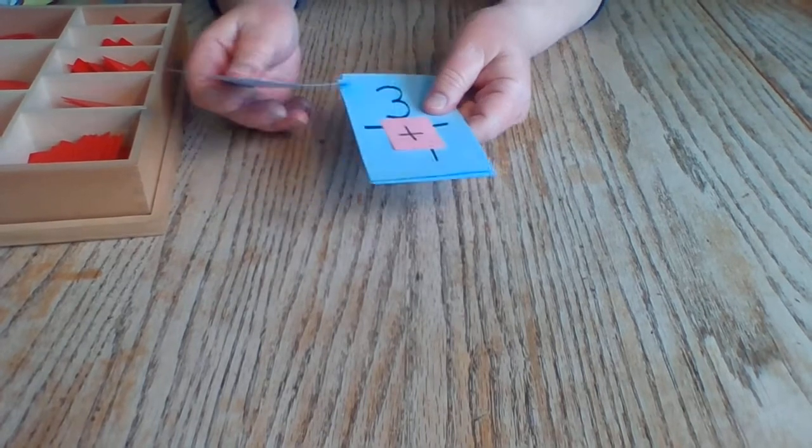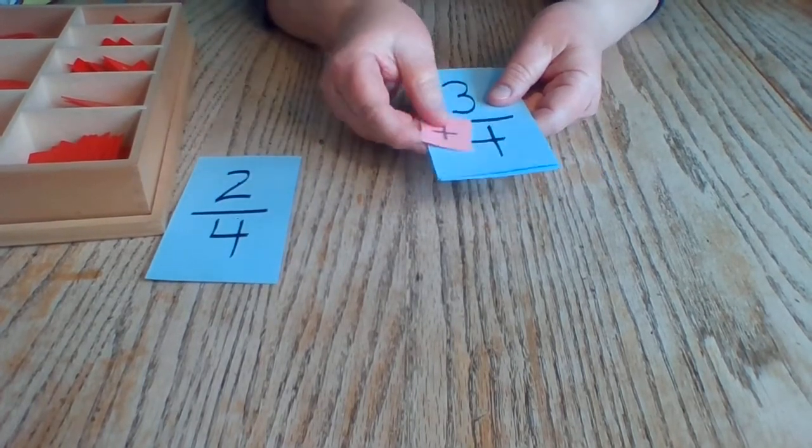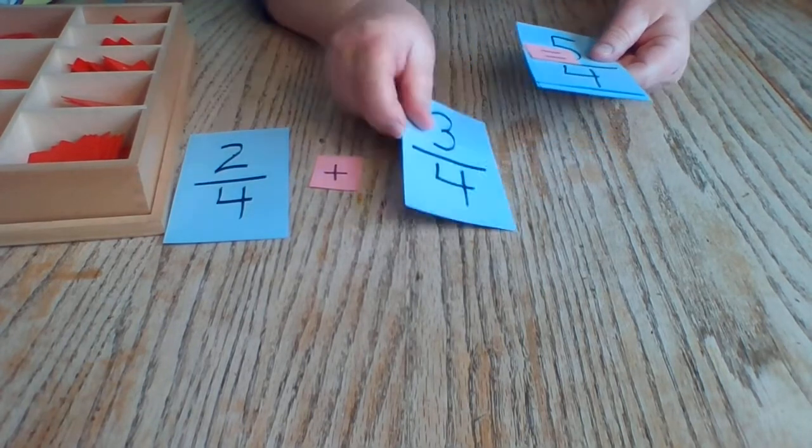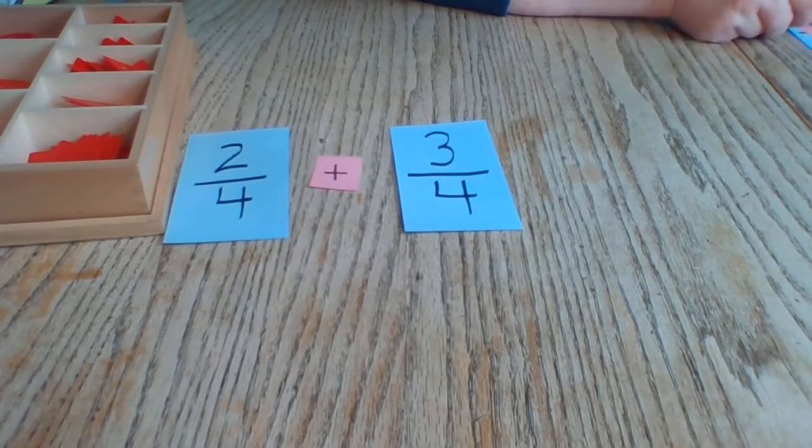Sometimes when you add your fractions together, you get an improper fraction. It means you have more in your numerator than you do in your denominator.